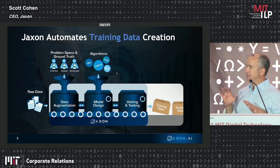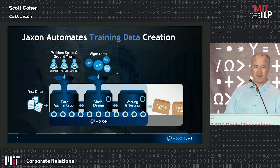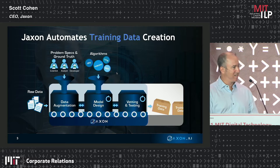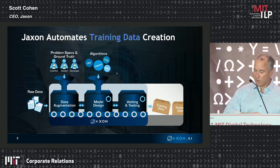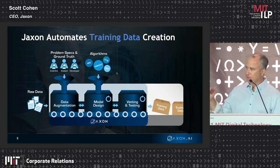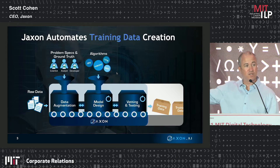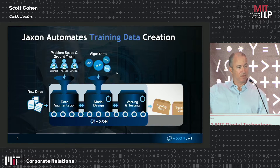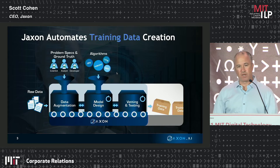Jackson is automating as much of the process as possible. We have not eliminated those pesky humans yet. We like to say that the humans are designing the factory — they're no longer working on the assembly line. So humans are there to design what the problem is, look over the shoulder of the machine, ensure the accuracy of the output, and then use the trained models in their production settings.